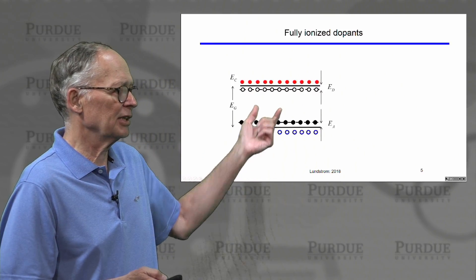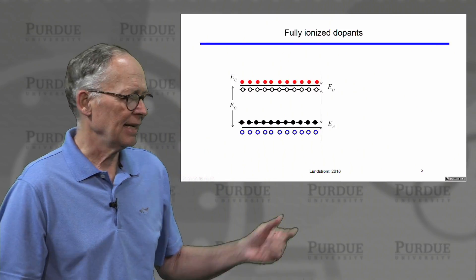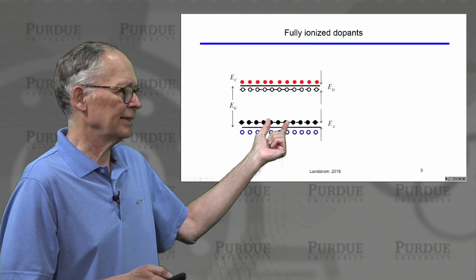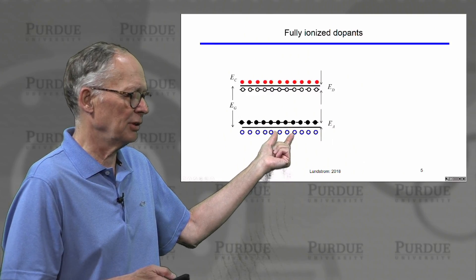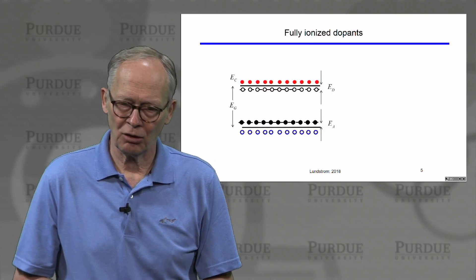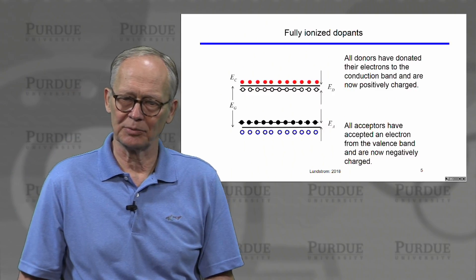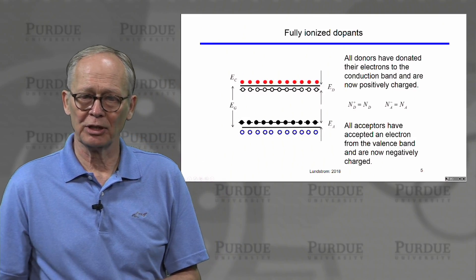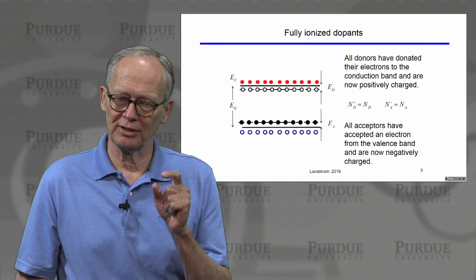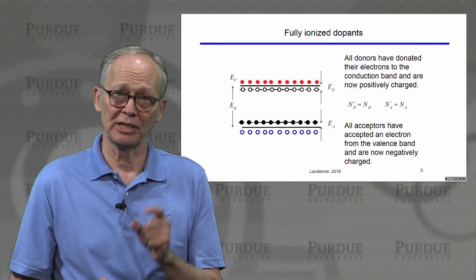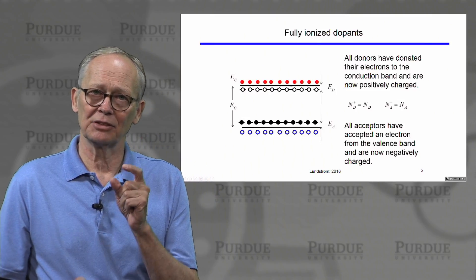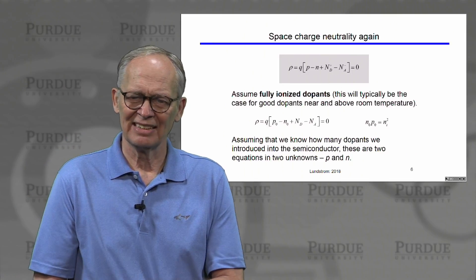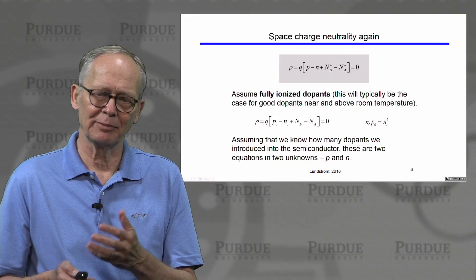We are also going to assume in this lecture that the dopants are fully ionized. Every donor has donated its electron to the conduction band. Every acceptor is negatively charged because an electron from the valence band has occupied each acceptor. All donors have positive charges and all acceptors have negative charges. This assumption works well at room temperature for semiconductors like silicon.